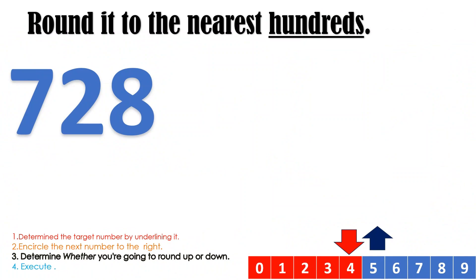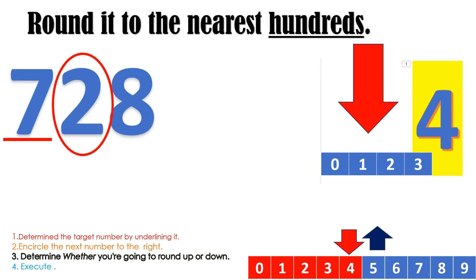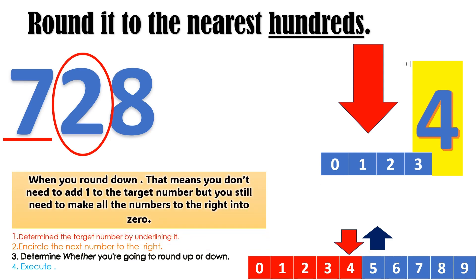Round 8 to the nearest hundredths. What is the target number? Good — it's number 7. What is the rounding number? Correct — it's number 2. Are we going to round up or round down? Very good — we are going to round down since number 2 is below number 4. When we round down, that means you don't need to add 1 to the target number, but you still need to make all the numbers on its right into 0. What is your final answer? 700.